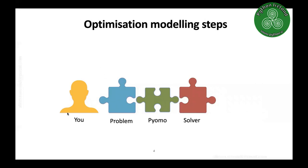If we want to do optimization, there are key steps. You, as the expert, play the most important role. You need to carefully describe your problem mathematically, because computers, Python, GAMS, or any other software don't understand oral descriptions. You write it down in a mathematical formulation and pass it to Pyomo. Pyomo then passes your problem to a solver. The concept is the same whether using Julia or GAMS — Pyomo and similar tools act as translators connecting your problem to the solver.